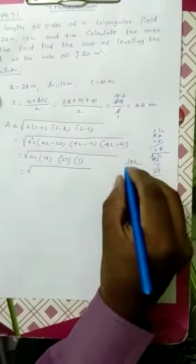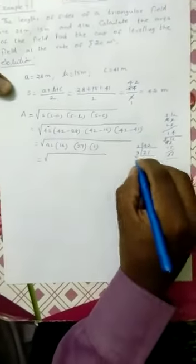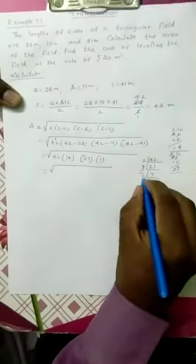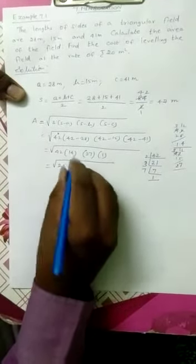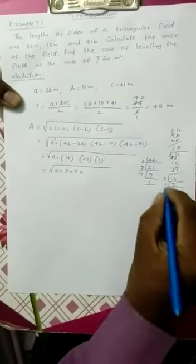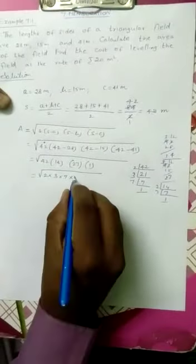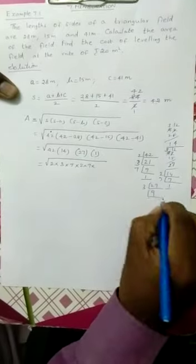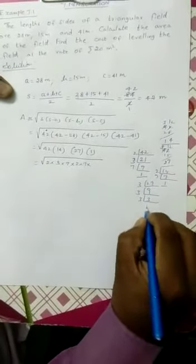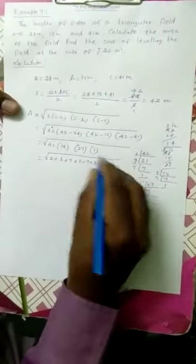Next, prime factorization of 42. Using the 2 times table: 2 times 21. Using the 3 times table: 3 times 7. So 42 equals 2 times 3 times 7. For 14: 2 times 7. For 27: using the 3 times table, 3 times 9, then 3 times 3. So 27 equals 3 times 3 times 3.